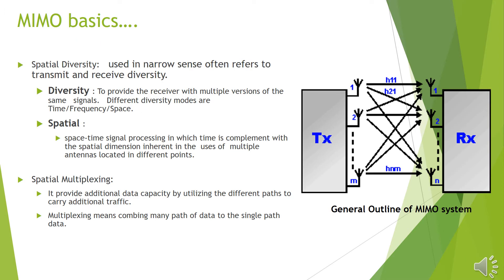In this slide we will talk about MIMO basics. Here we are seeing the basics of diversity and spatial. Diversity is the modes which are based on time, frequency and spatial — that is the spatial dimension of the antennas used in wireless communication. In spatial multiplexing, different paths are used for additional data capacity so that data can be transferred in a more appropriate way.